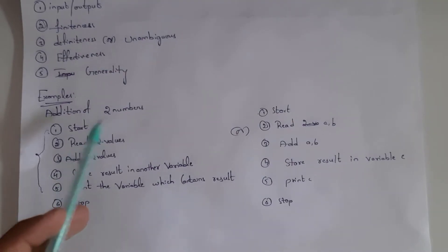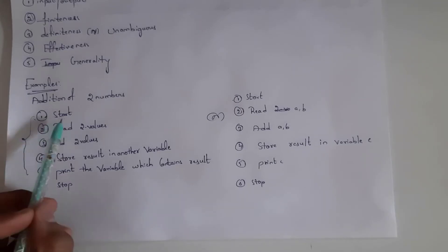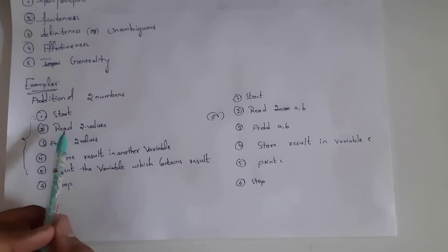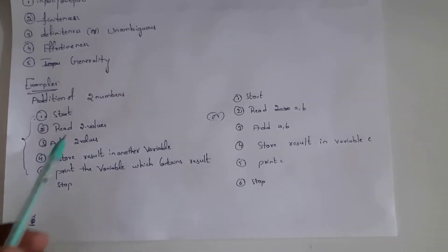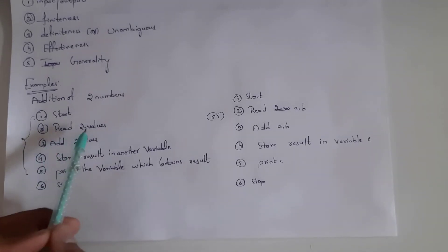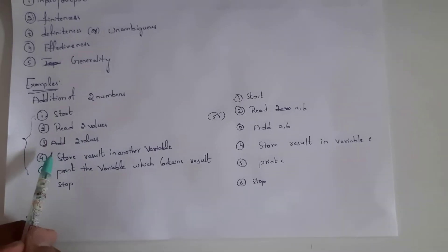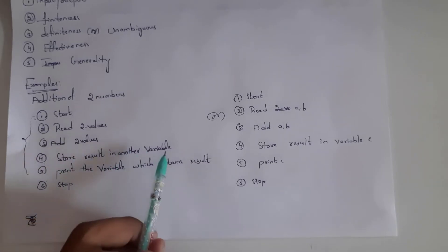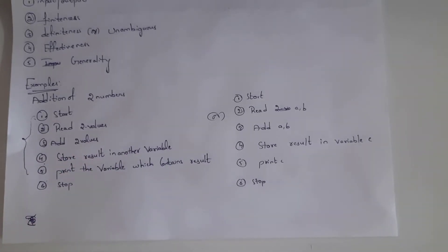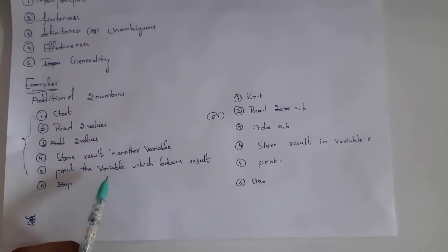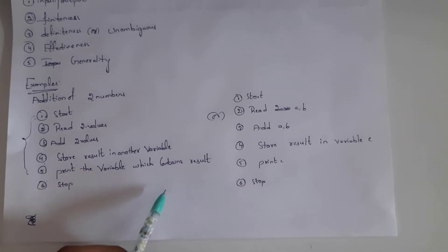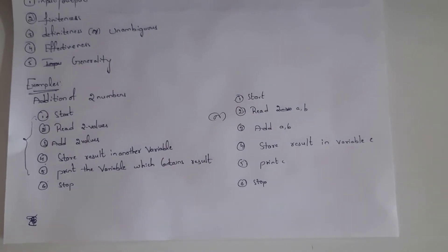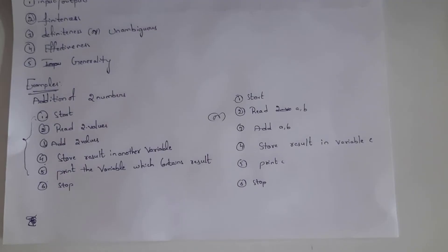Here is an example — I am writing an algorithm for the addition of two numbers. Step one: Start. Step two: Read two values. Step three: Add these two values. Step four: Store the result in another variable. Step five: Print the variable that contains the result. Step six: Stop.